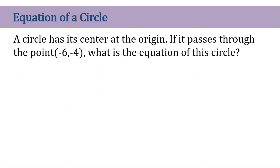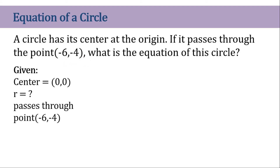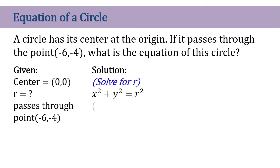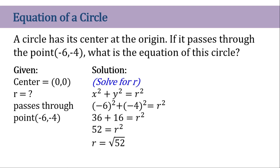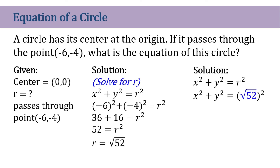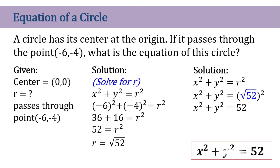Next, same type of question but passing through a different point. Let's solve for r first. (-6)² is 36, (-4)² is 16, and we have r² = 52. So r is equivalent to the square root of 52. And this will be our circle equation.